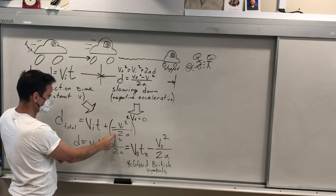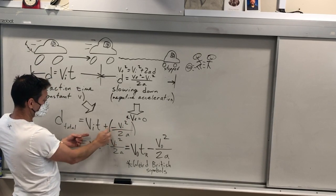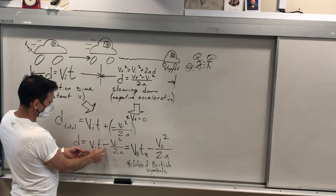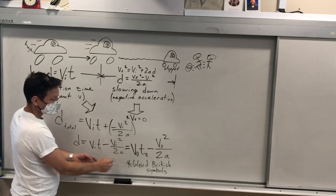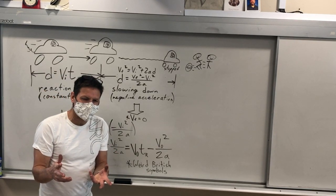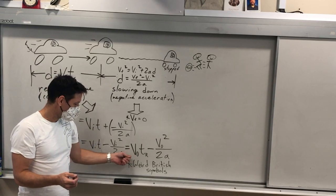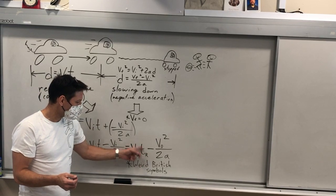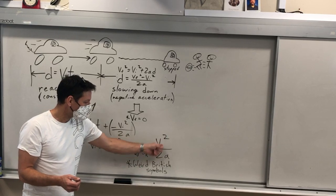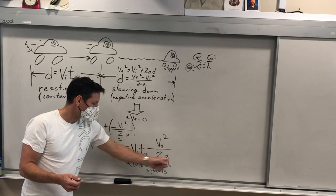And then we can just get rid of the plus because this is a negative. We say this minus this. And then if you put it in the weird British symbols, VI becomes V0, it's actually called V0. And TR, which is reaction time, and V0 again over 2A.